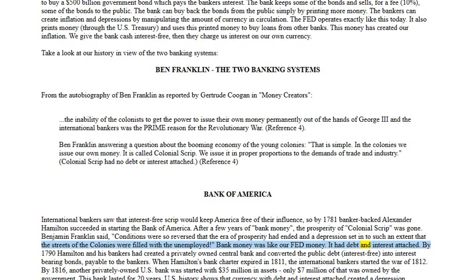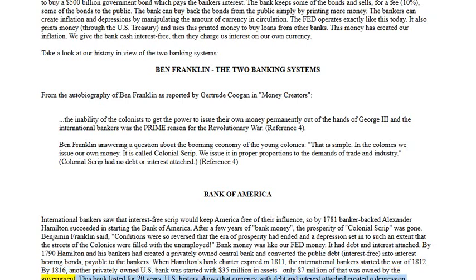Bank money was like our Fed money — it had debt and interest attached. By 1790, Hamilton and his bankers had created a privately owned central bank and converted the public debt interest-free into interest-bearing bonds payable to the bankers. When Hamilton's bank charter expired in 1811, the international bankers started the War of 1812. By 1816, another privately owned U.S. bank was started with 35 million dollars in assets, only 7 million dollars of which was owned by the government.